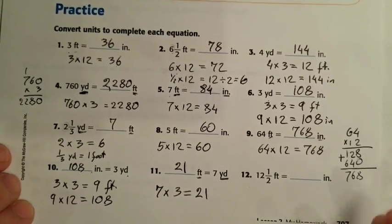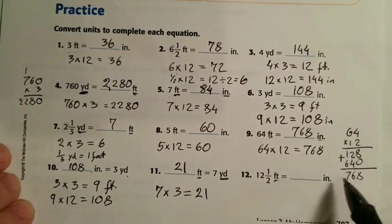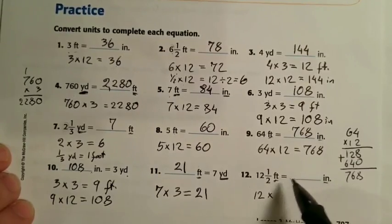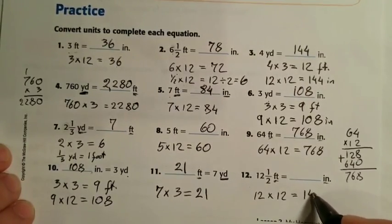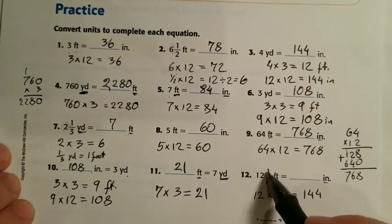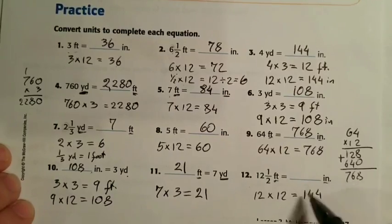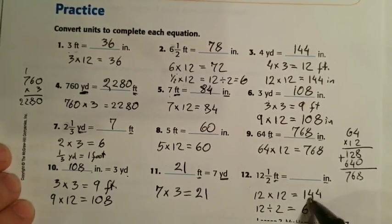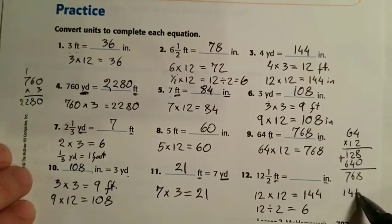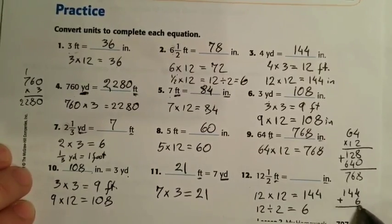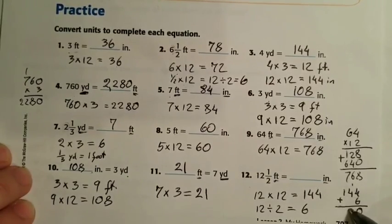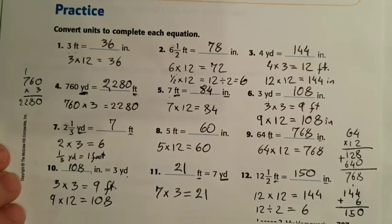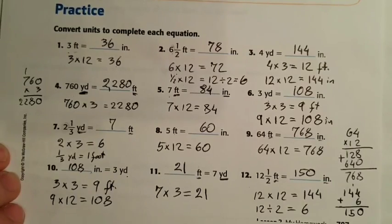Number twelve: twelve and a half feet to inches. Feet to inches means we multiply by 12. For the whole number: 12 times 12 is 144. For the half foot: half of 12 is 12 divided by 2, which is 6. So 144 plus 6 equals 150 inches.